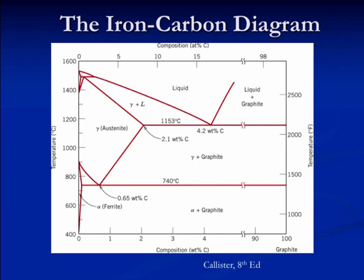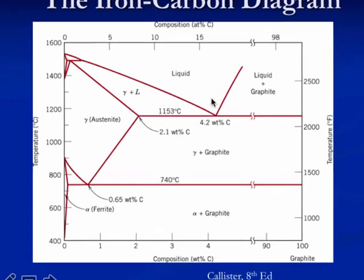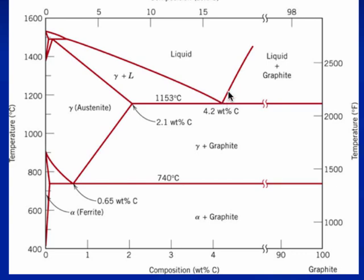Here's the iron-carbon diagram. If you look at this, there's a couple of important V-shapes present. There's an upward V — that's a U shape — liquid above, two solids below, so there's a eutectic. This is commercially important because as we add carbon to iron, we suppress the melting temperature from about 1540 down to about 1150 degrees, roughly 400 degrees. That's worth a lot of natural gas or electricity if you're melting it. Cast irons involve high carbon contents to take advantage of this eutectic.